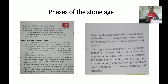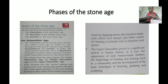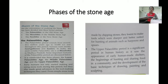Paleolithic means the Old Stone Age — when people first started using stones as tools. Mesolithic means the Middle Stone Age. And Neolithic means the New Stone Age, when they had very good weapons and tools. So today we are going to study about these three stone ages.